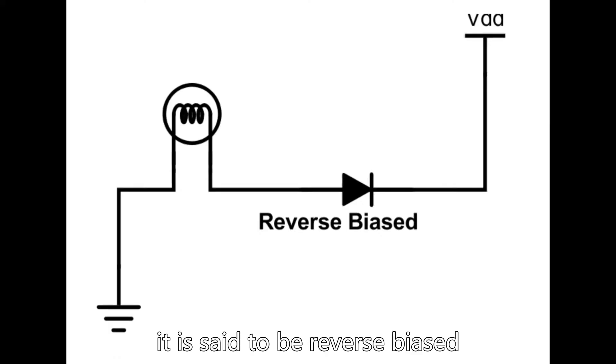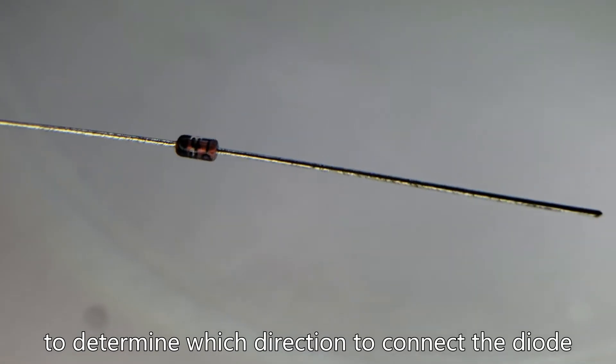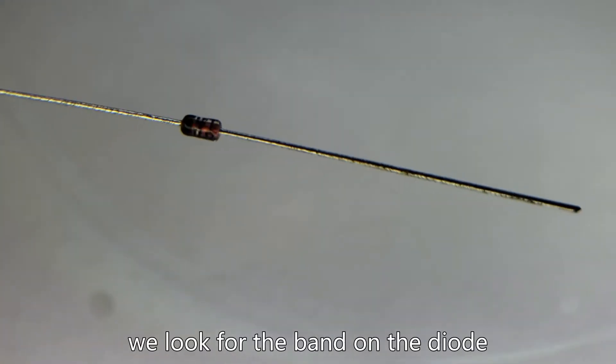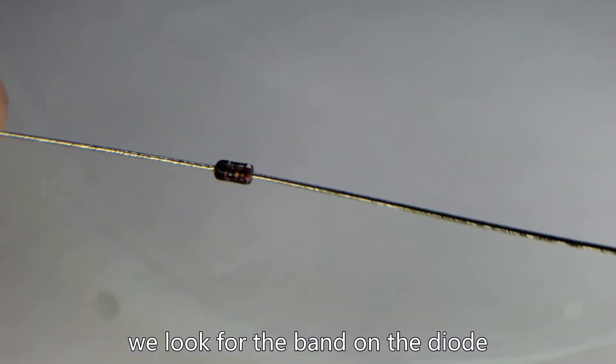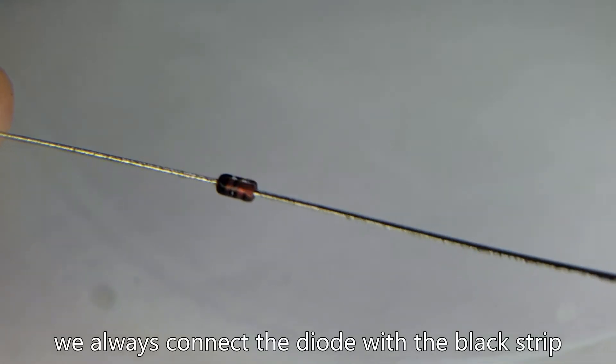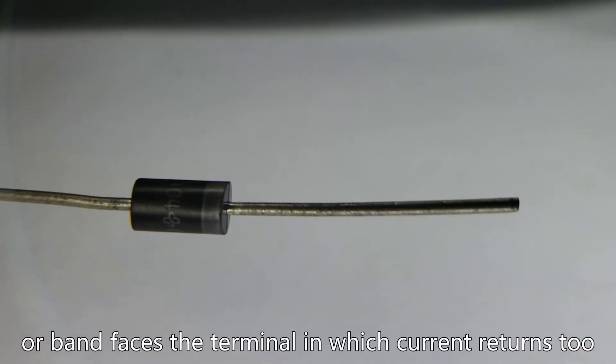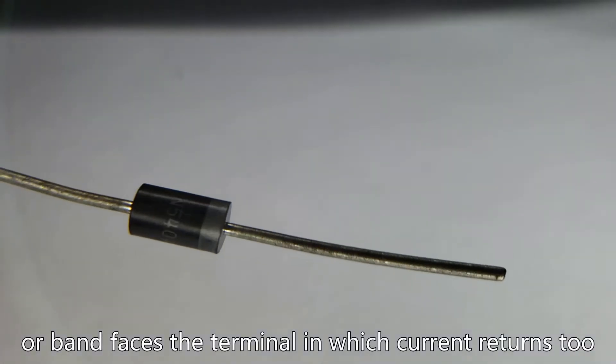To determine which direction to connect the diode, we look for the band on the diode. We always connect the diode so that the black stripe or band faces the terminal in which current returns to.